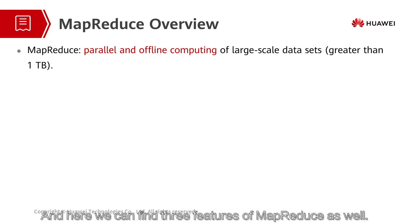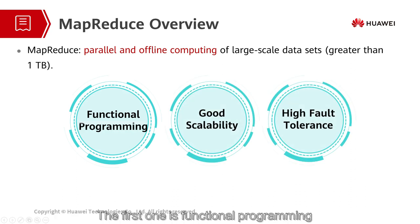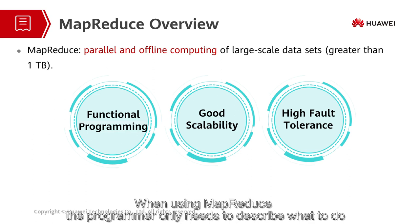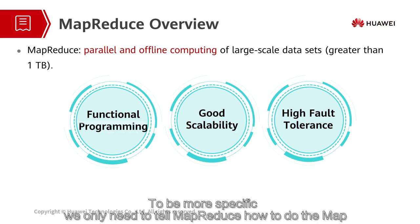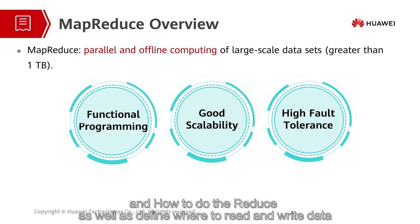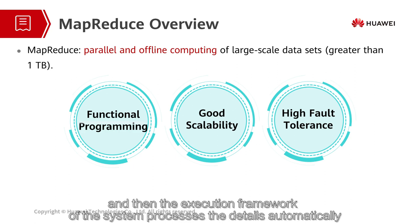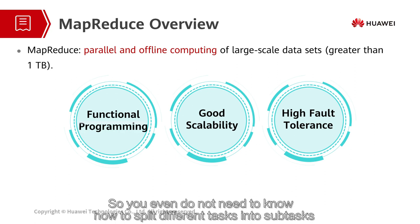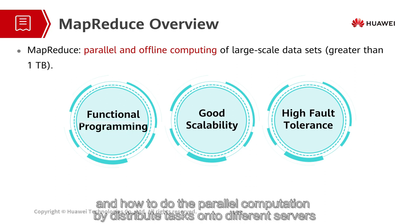Here we can find three features of MapReduce. The first one is functional programming. When using MapReduce, the programmer only needs to describe what to do. Specifically, we only need to tell MapReduce how to do the map and how to do the reduce, as well as define where to read and write data. Then the execution framework of the system processes the details automatically, so you do not even need to know how to split different tasks into subtasks or how to do parallel computation by distributing data on different servers.